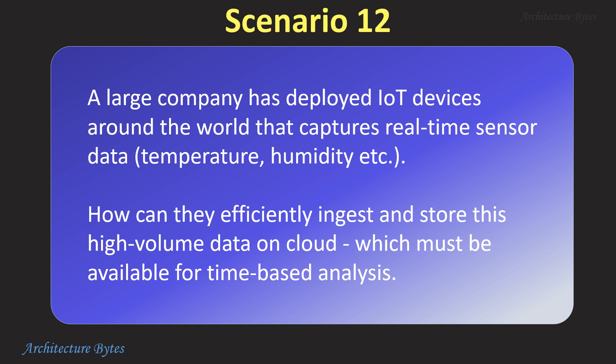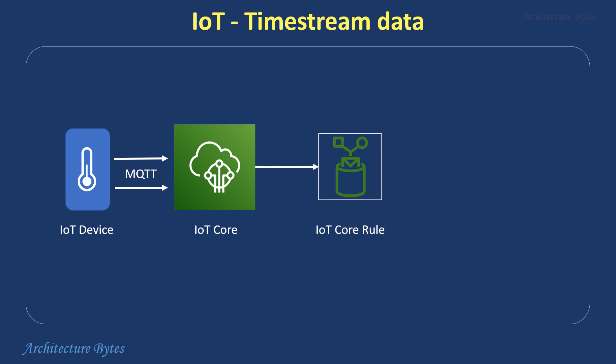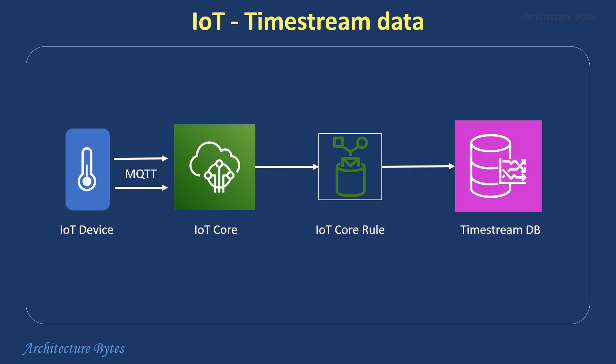A large company has deployed IoT devices around the world that capture real-time sensor data like temperature and humidity. How can they efficiently ingest and store this high-volume data on the cloud for time-based analysis? The IoT devices can send sensor data to AWS IoT Core Service via MQTT, which is then filtered and routed using IoT Core rules and stored in a Timestream database. Timestream is a fast, scalable time series database that can efficiently store large streams of data points like sensor readings with timestamps, facilitating analysis of recent and historical data over time.